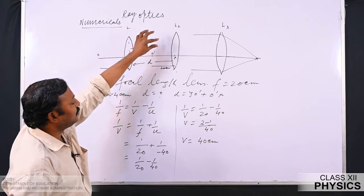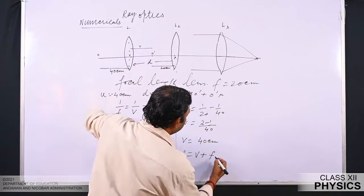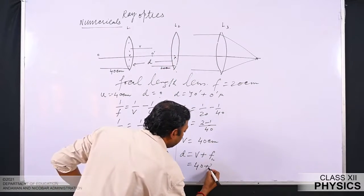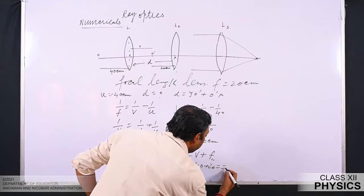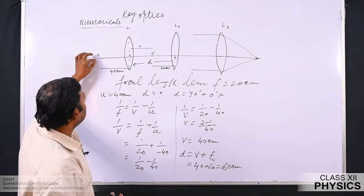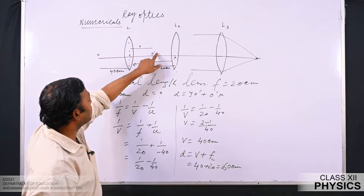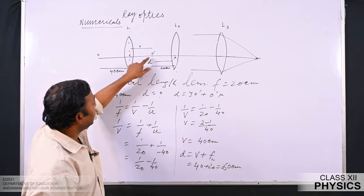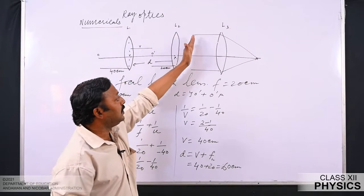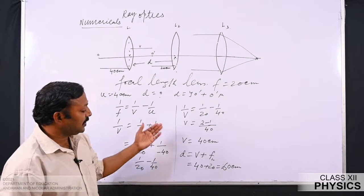The separation D between lens L1 and L2 equals V plus the focal length of L2, which is 40 plus 20, giving 60 centimeter. So the separation between L1 and L2 is 60 centimeter. To summarize: lens L1 forms image O' at 40 centimeter; this lies at the focus of L2 so a parallel beam exits L2; that parallel beam enters L3 and forms the image at its focus.